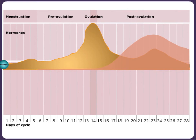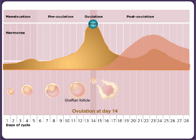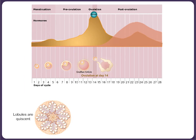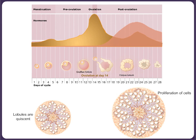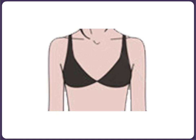From day 0 of the menstrual cycle, there is a rise in the level of estrogen with formation of the Graafian follicle in the follicular phase. Lobules are quiescent in this phase. In the post-ovulatory phase, there is a second peak of estrogen along with rising levels of progesterone from the corpus luteum. These hormones result in proliferation of cells of the ductolobular epithelium along with an increased number of acinae. Moreover, there is an increase in the fat and water content within the breast stroma, resulting in an increase in breast volume, compelling some ladies to change their garment to a larger size.